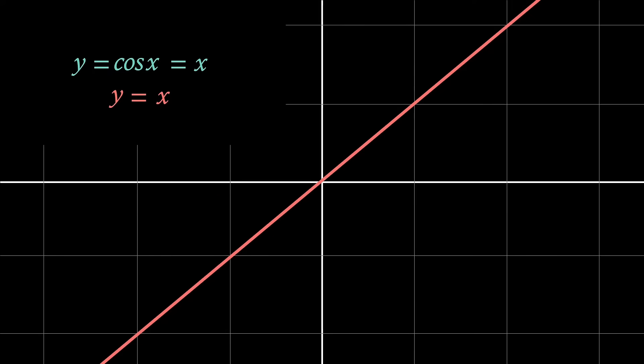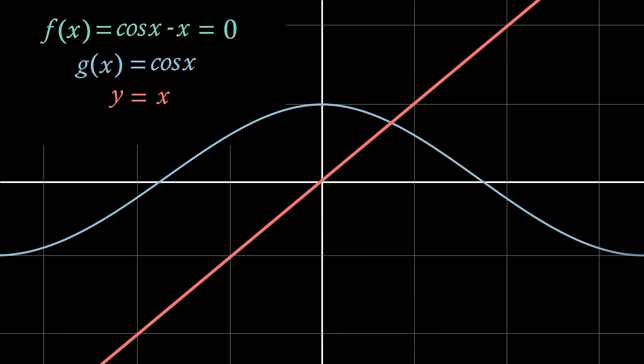Whilst the bisection method is effective and robust, meaning it doesn't usually run into errors, it can be quite slow. Returning to our function f of x equals cos x minus x equals 0, if we rewrite this with y instead of f of x and rearrange such that we have y equals x, then if we create a new function, g of x, with the remaining equation, in this case just being cos x, then we can see that where our original function f of x has a root, the new function, g of x, intersects with y equals x.